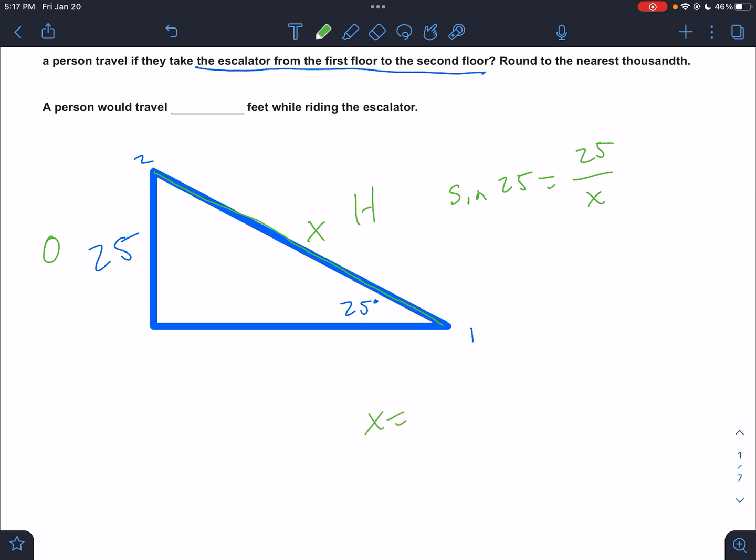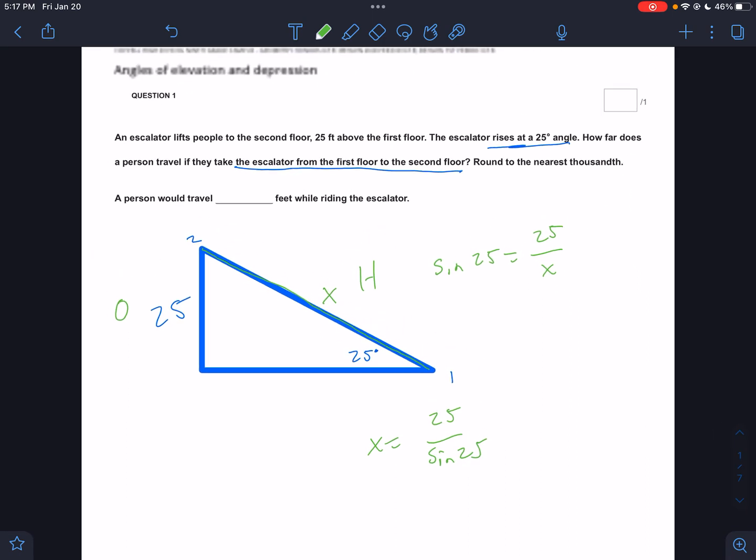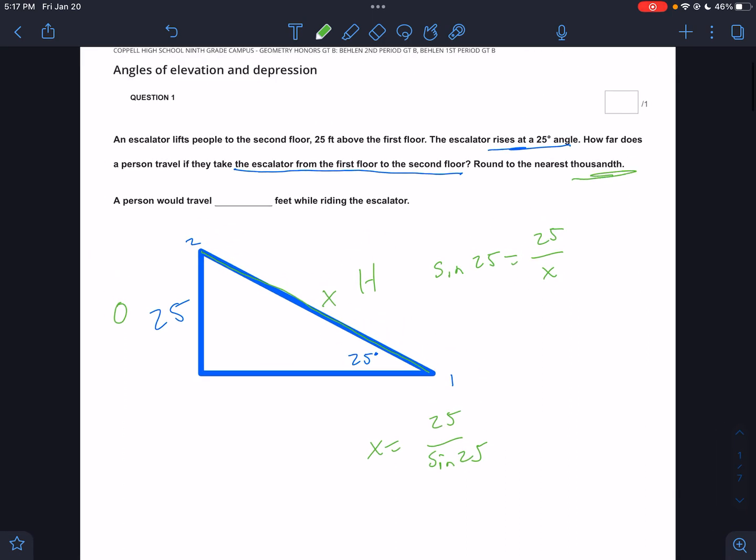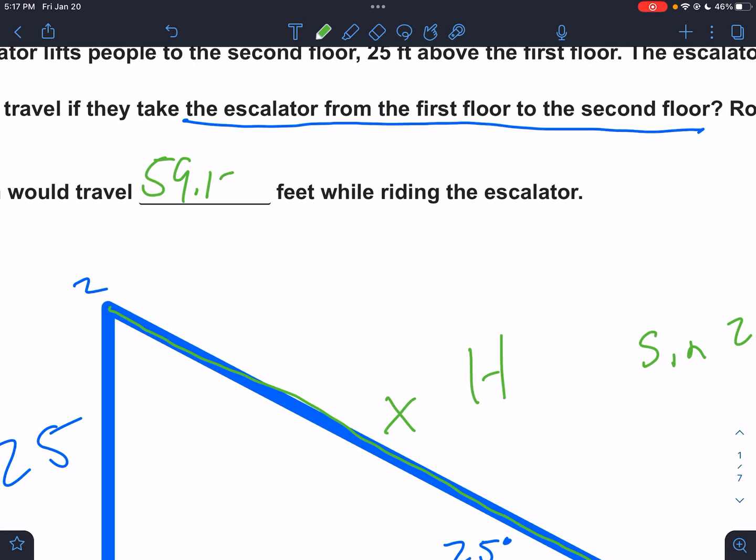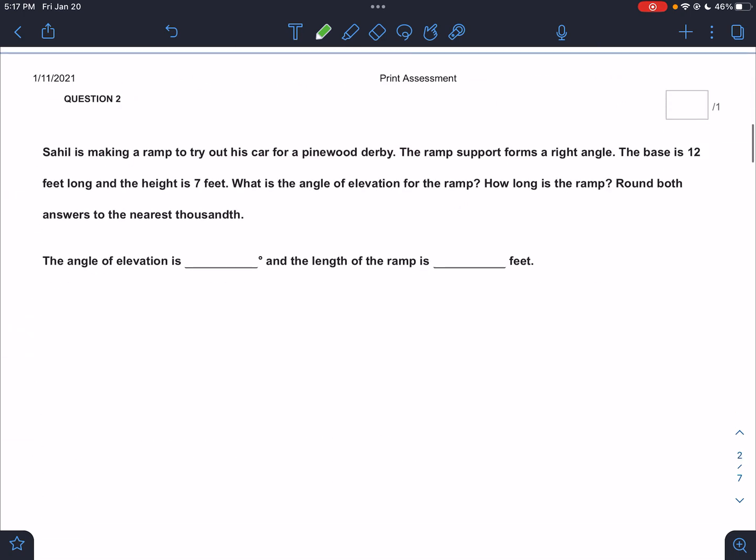So x equals 25 over the sine of 25. So 25 over sine 25. I get, and I'm rounding to the nearest thousandths, 59.155. Boom. Next question.